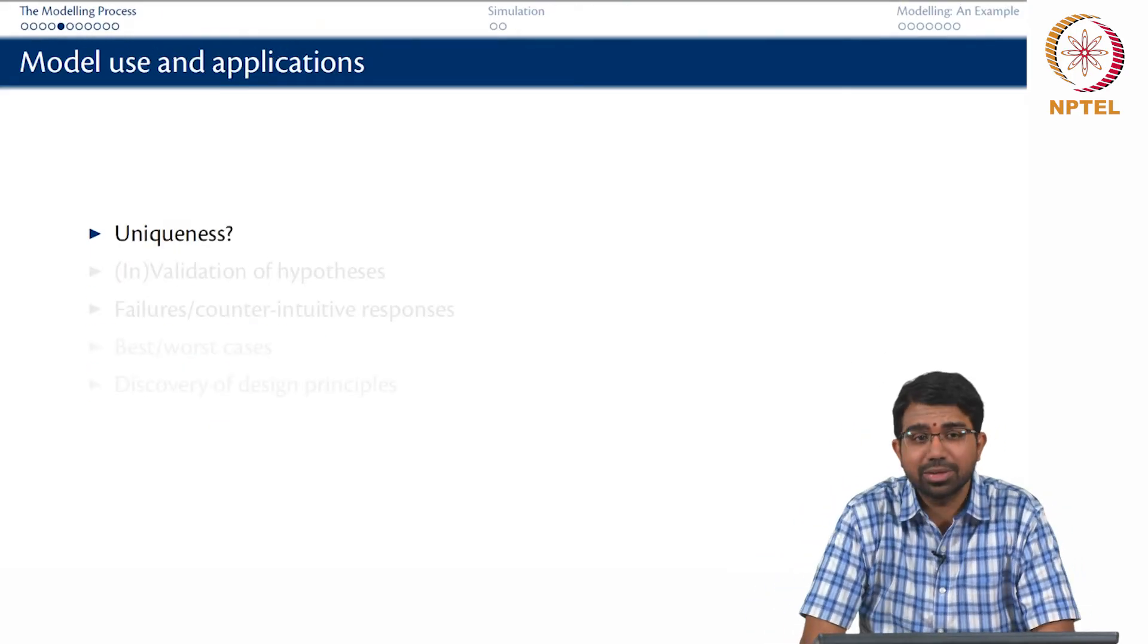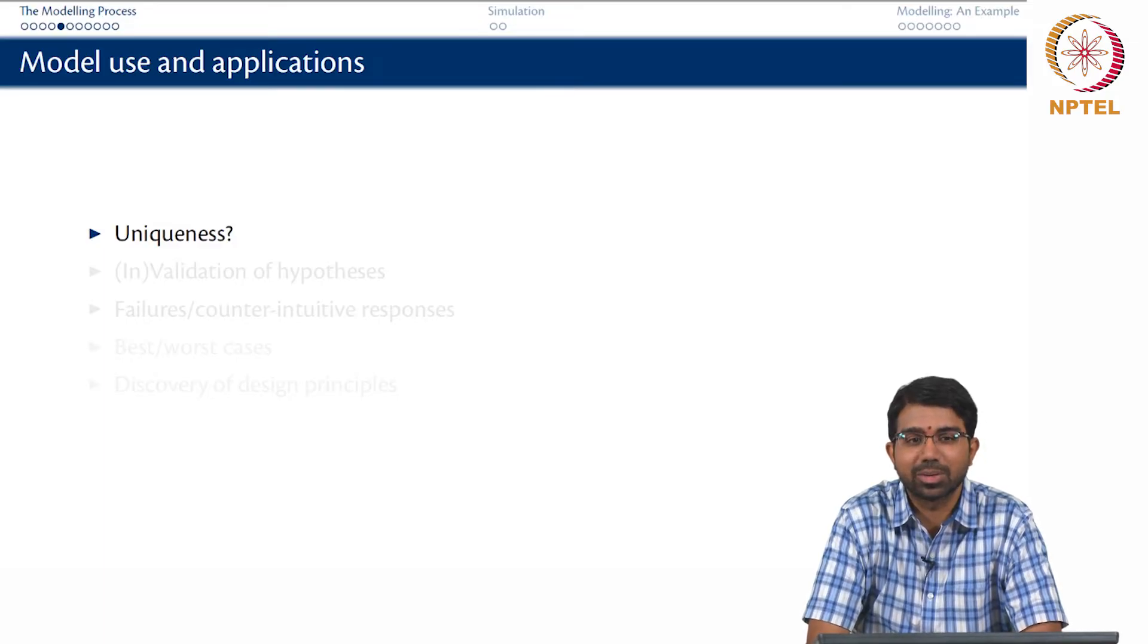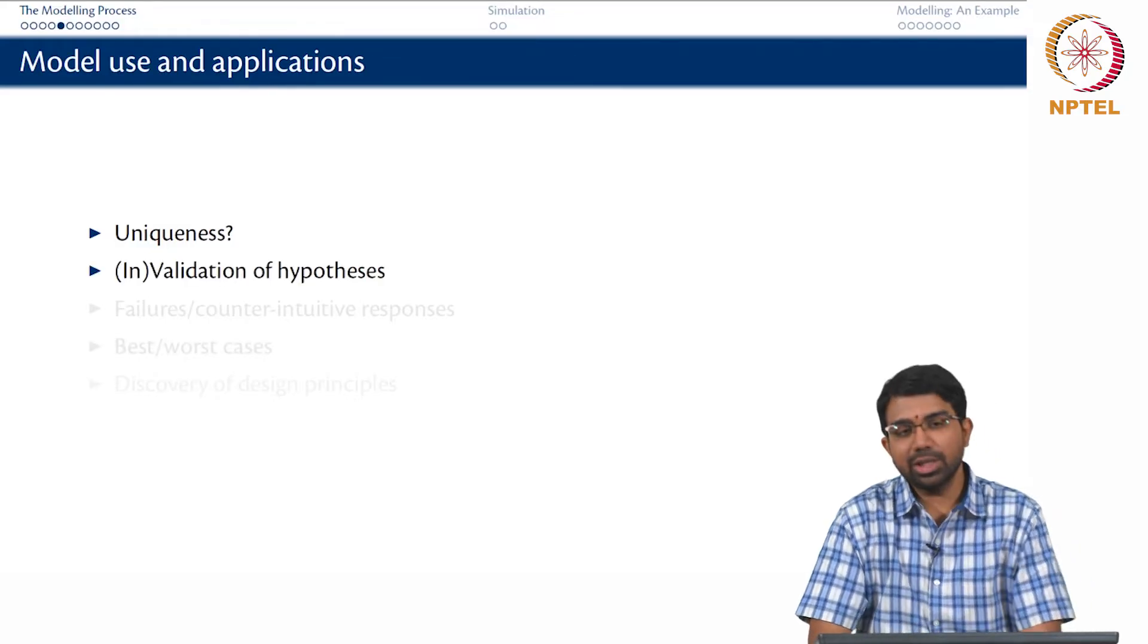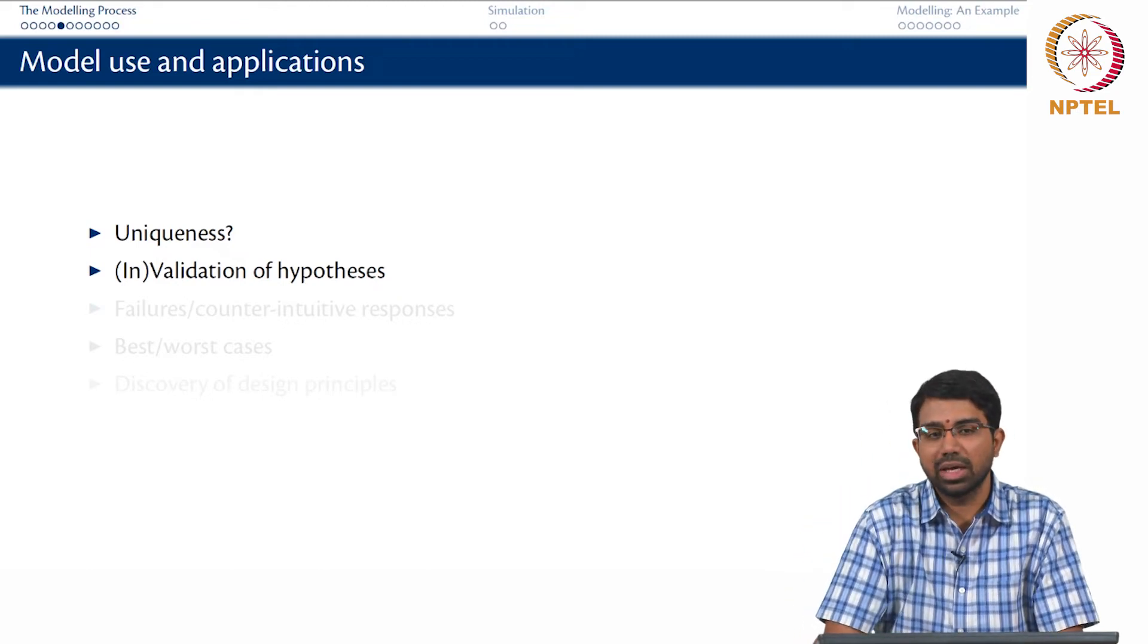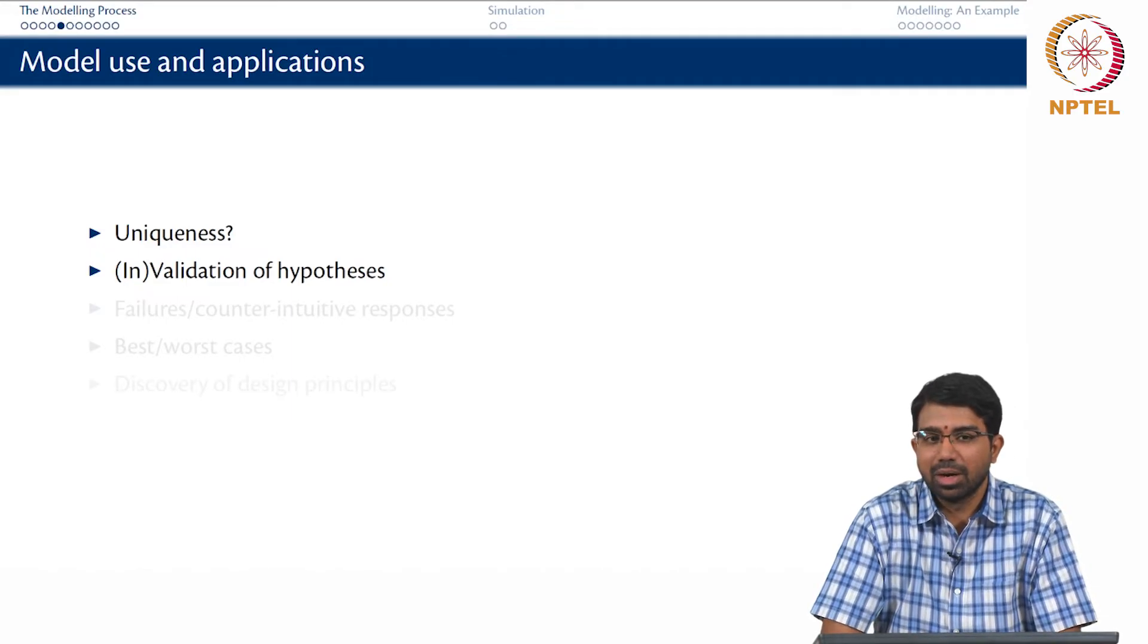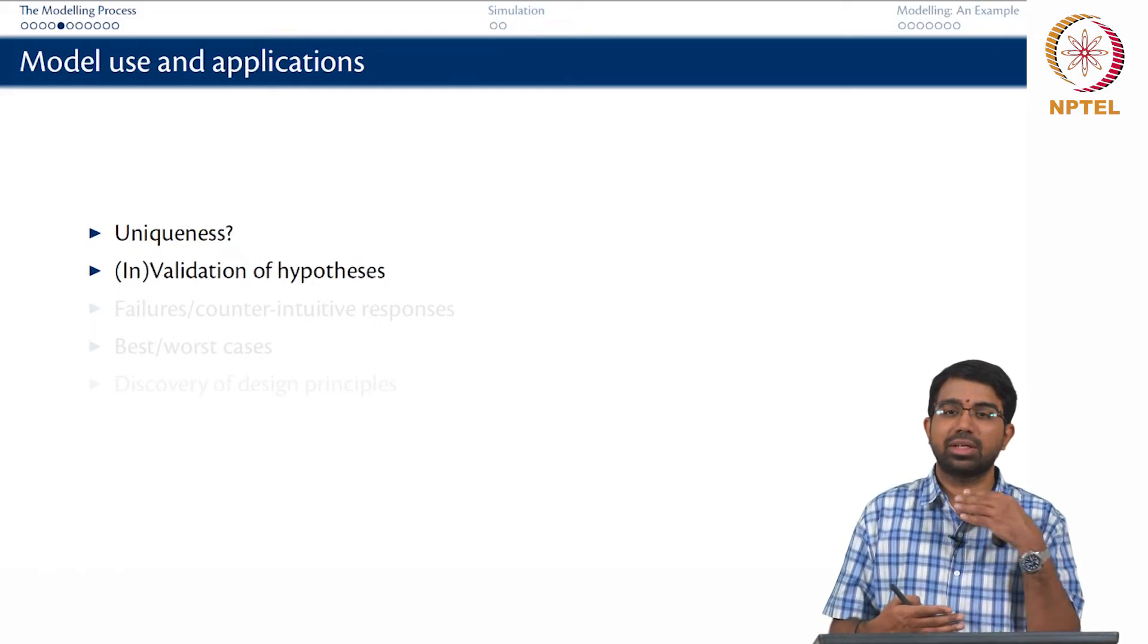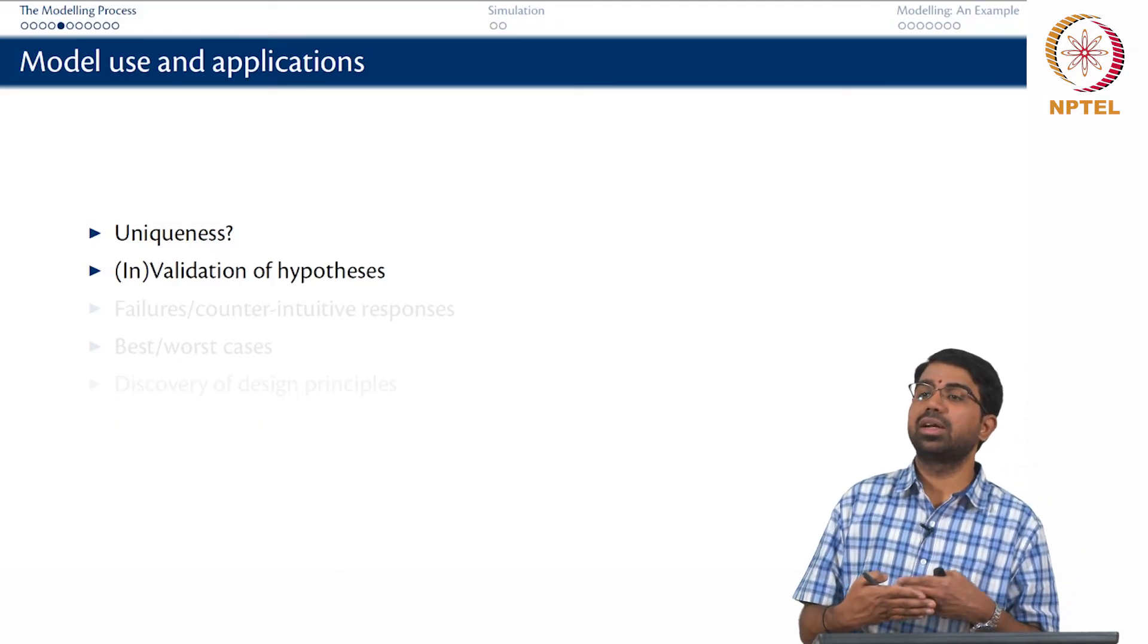Is your model unique? These are all very difficult, sometimes almost bordering on philosophy questions. Is there one model that can describe my system well enough? But better still, can you invalidate hypothesis? This is in fact one of the most useful aspects of any modeling exercise. You start with a hypothesis, you do not like it, you cannot prove it. Can you show that if you make these assumptions, the model breaks down, the model cannot explain your reality, then you may have in fact succeeded in invalidating your hypothesis.